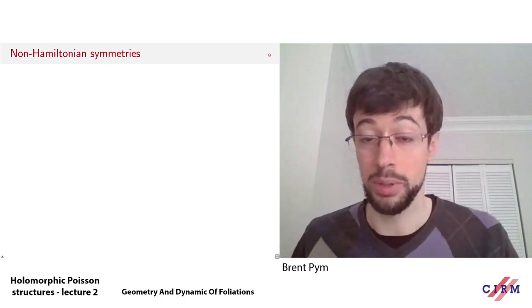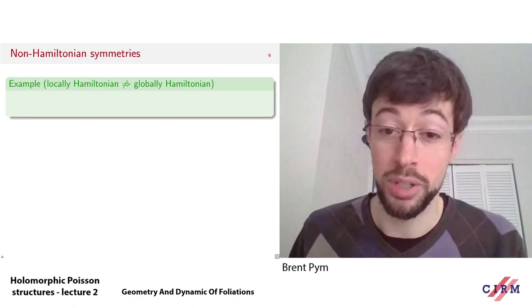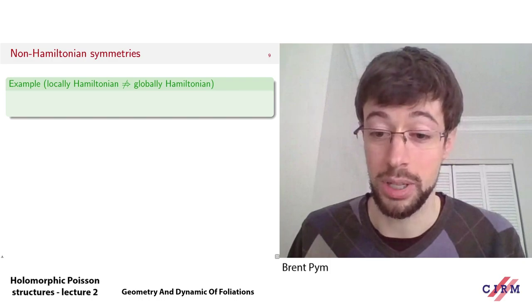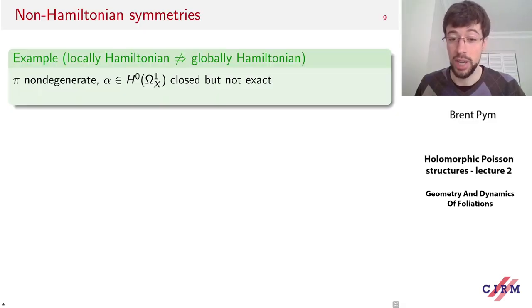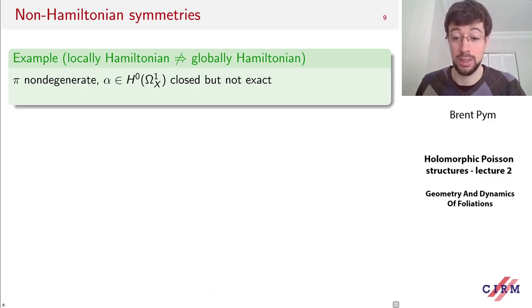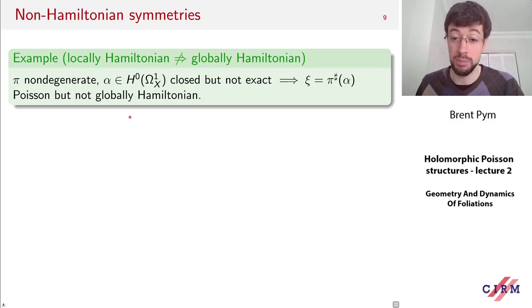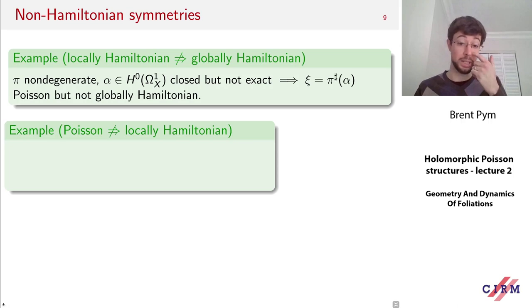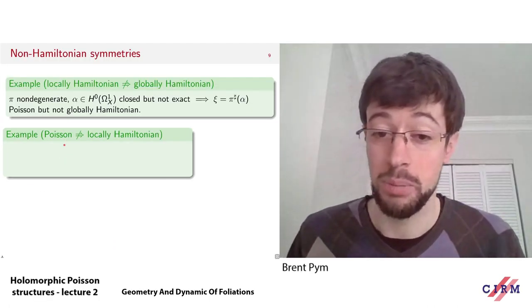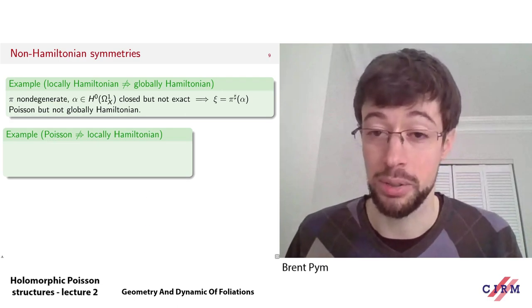But there are many non-Hamiltonian symmetries once you get outside the non-degenerate case. Even in the non-degenerate case, there's an important distinction between locally Hamiltonian and globally Hamiltonian. If pi is non-degenerate and I take a global one-form which is closed but not exact, the corresponding vector field will be Poisson but not globally Hamiltonian since there's no function f with alpha = df. So locally Hamiltonian does not imply globally Hamiltonian.